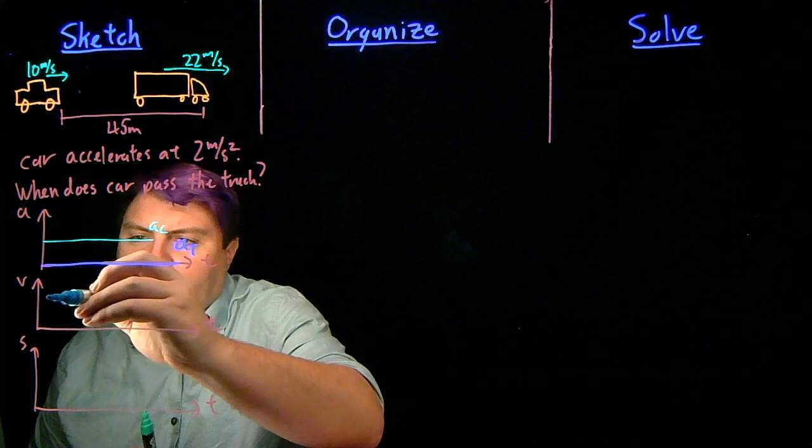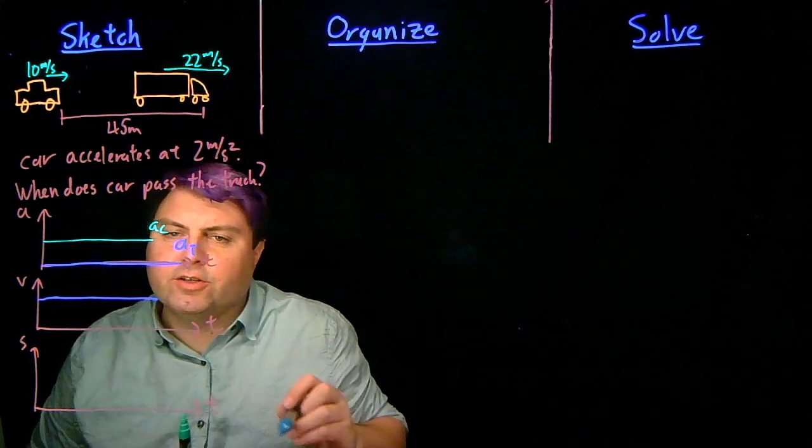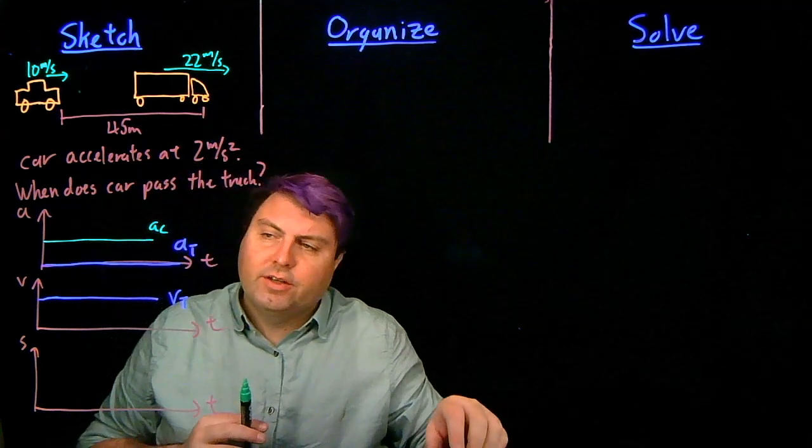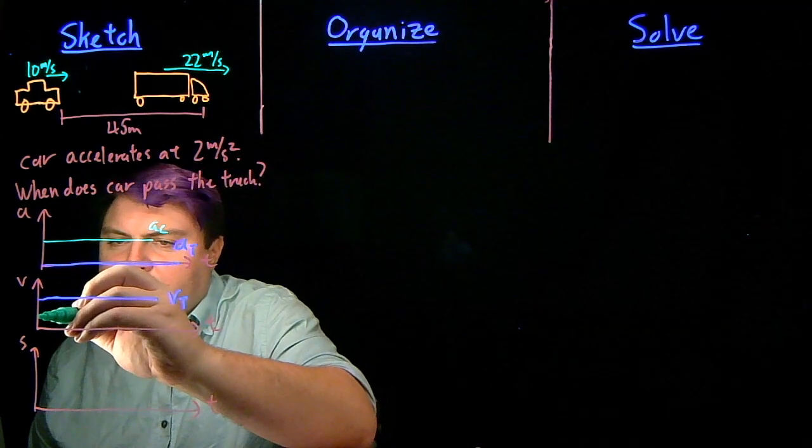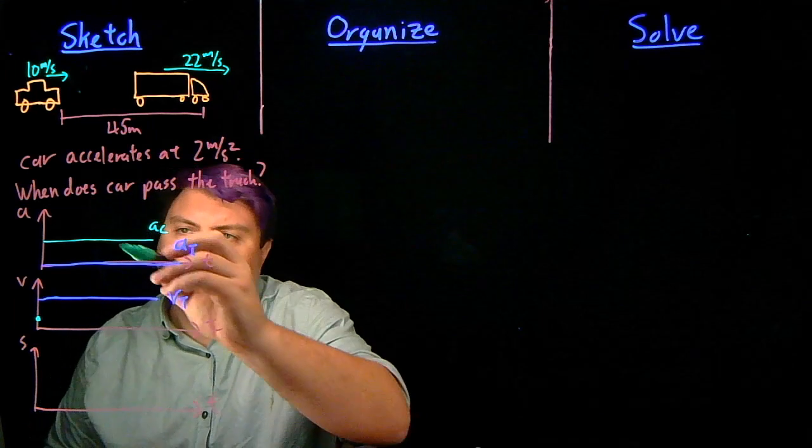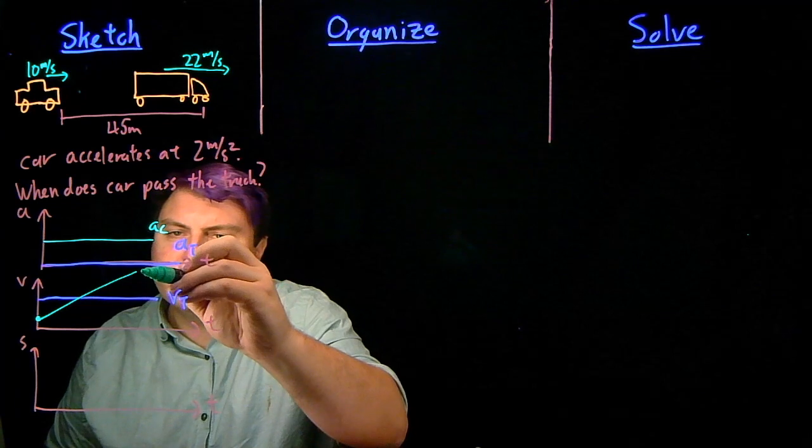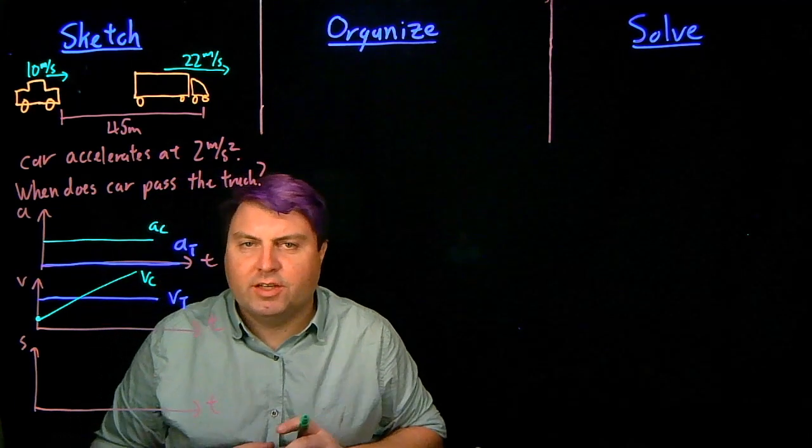For our truck, it has a fairly large initial but constant velocity. So we can write this as the velocity of the truck. And then our car starts at a smaller velocity. But we can see it has a positive acceleration, which means this line has to have a positive slope. This would be the velocity of the car.